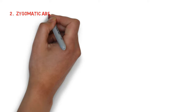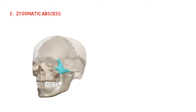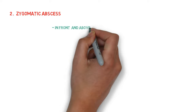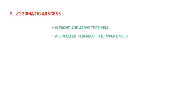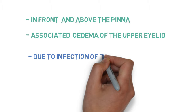The next one is the zygomatic abscess. It is a rare complication of mastoid infection. It occurs in the zygomatic bone, in front of and above the pinna, and it is generally associated with edema of the upper eyelid. In these cases, pus collects either superficial or deep to the temporalis muscle. It occurs due to infection of zygomatic air cells situated at the posterior root of the zygoma.